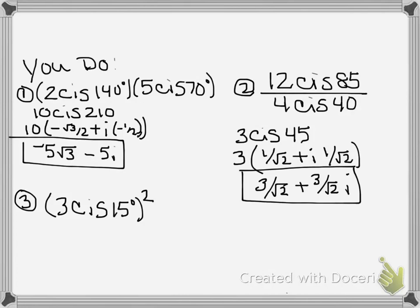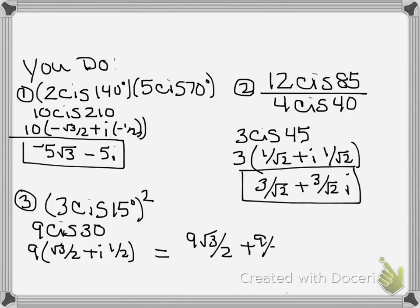Number 3. You have to think, what does it mean to square something? Multiply it by itself. So 3 cis 15 times 3 cis 15. 3 times 3 is 9. 15 plus 15 is 30. So we get 9 cis 30. That's 9 times cosine of 30 degrees, root 3 over 2 plus i sine of 30 degrees, 1 half. Distribute that 9 and we end up with 9 root 3 over 2 plus 9 over 2i. How'd you do? Hopefully you got all three right and that would be great.